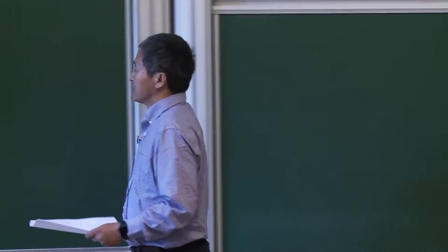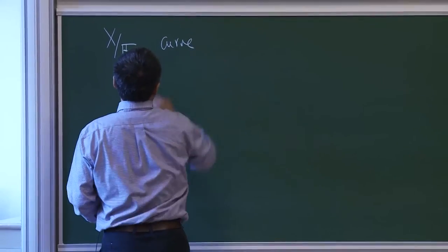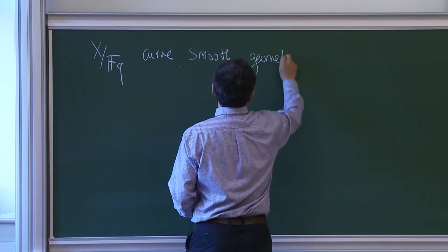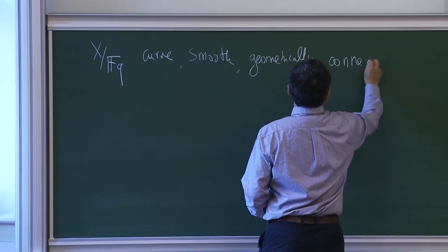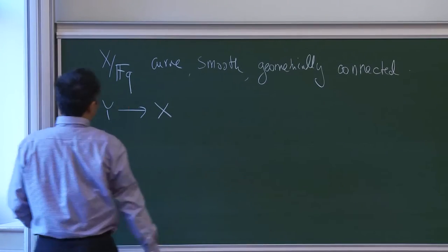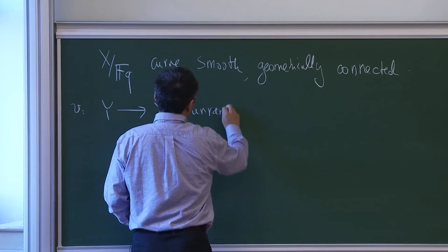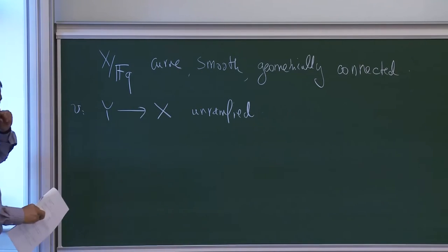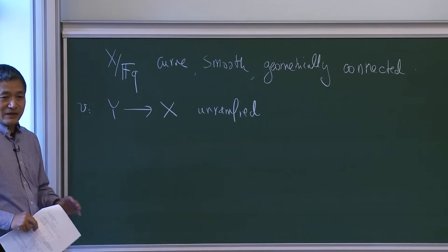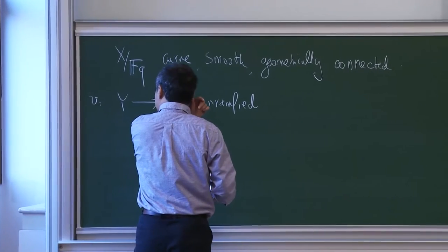Let me start with some notation. I start with F_q, a curve X over F_q — smooth, geometrically connected. We assume unramified; of course the theorem still makes sense without that assumption. Yun has already pushed everything to square-free conductor, but they need some time to finish the manuscript, so we will not talk about the new result. We still assume unramified, but with a double cover.